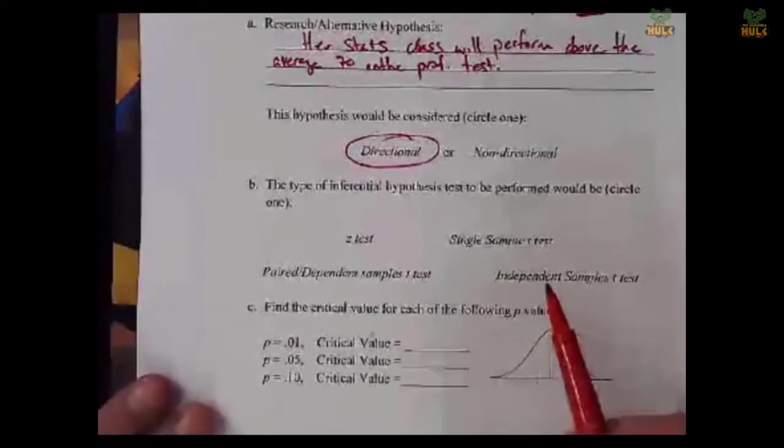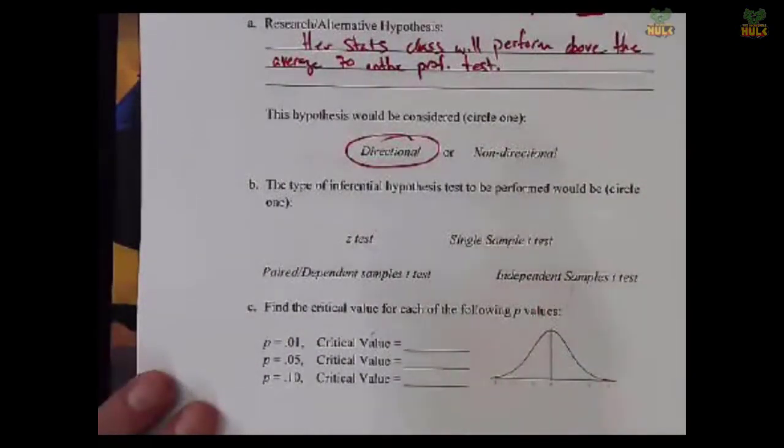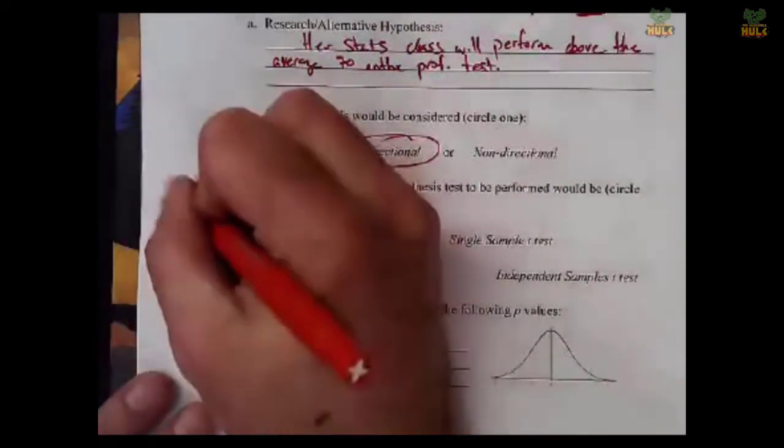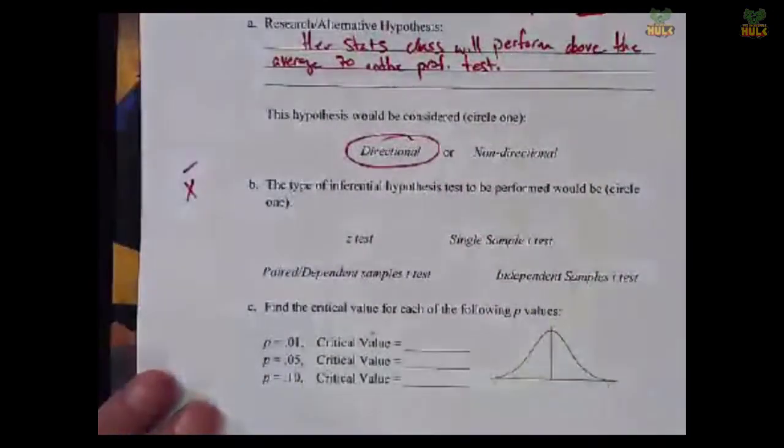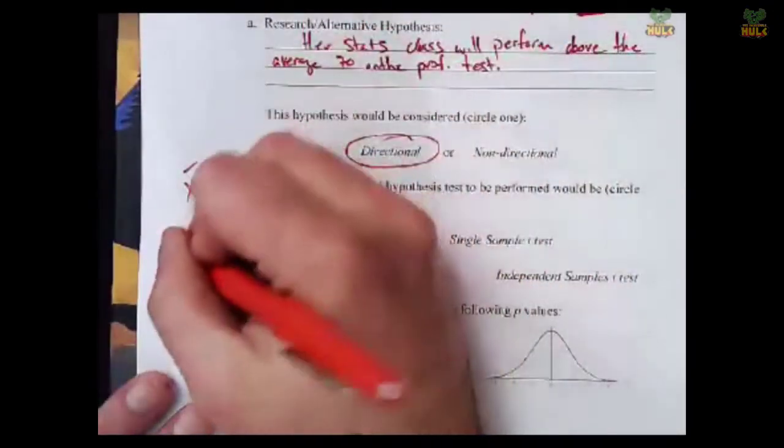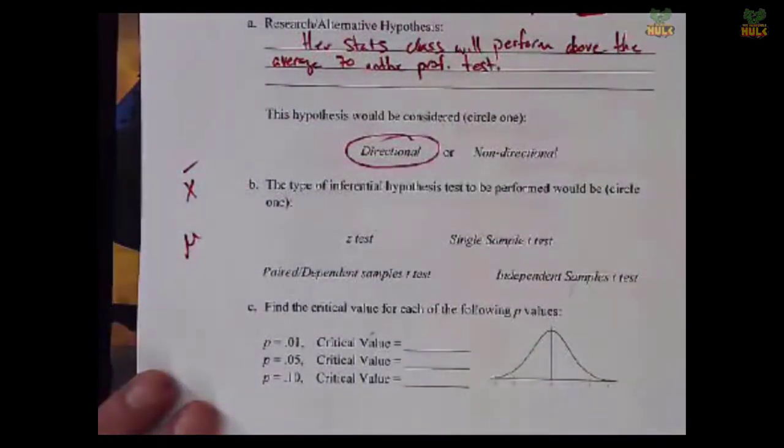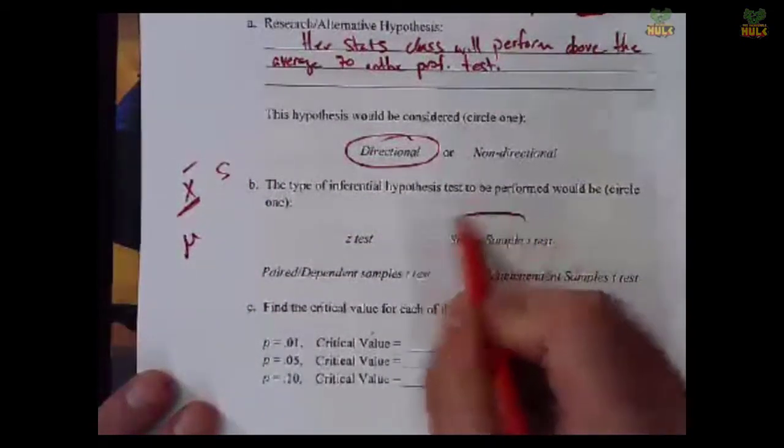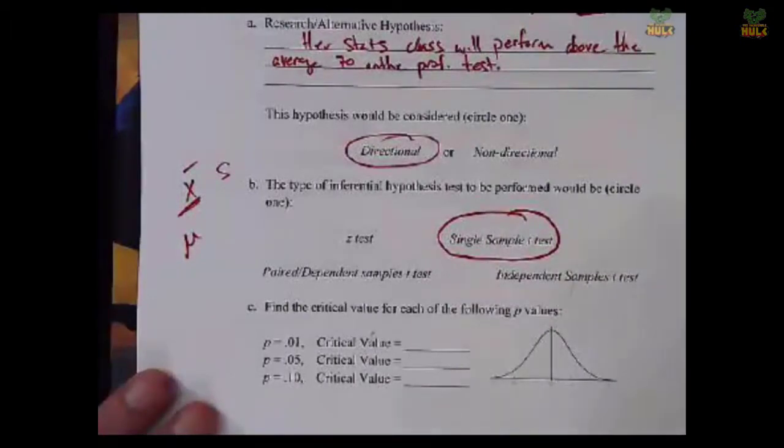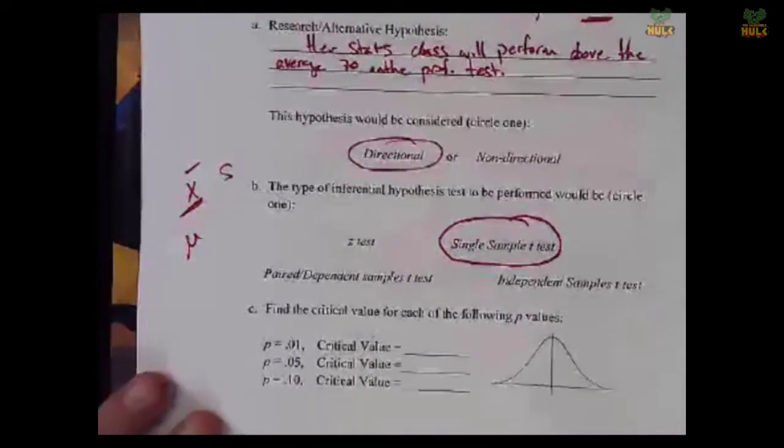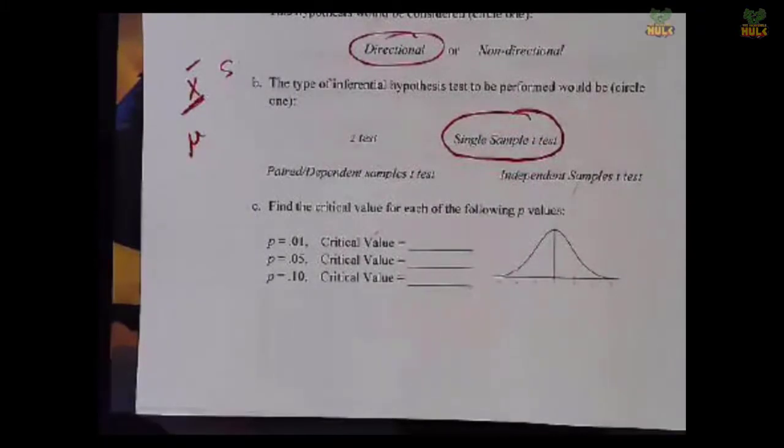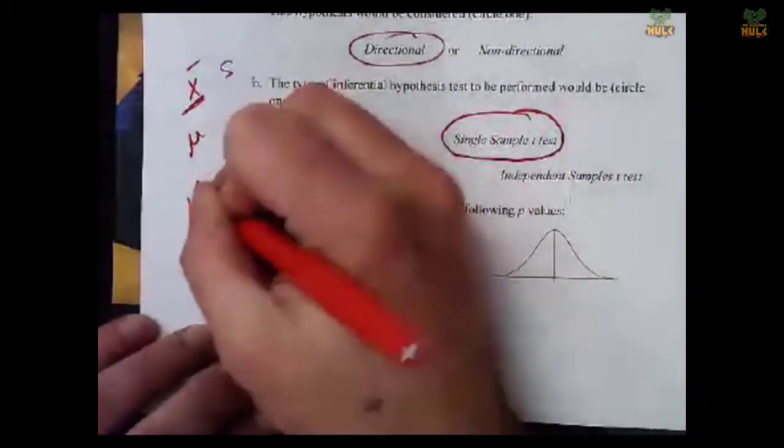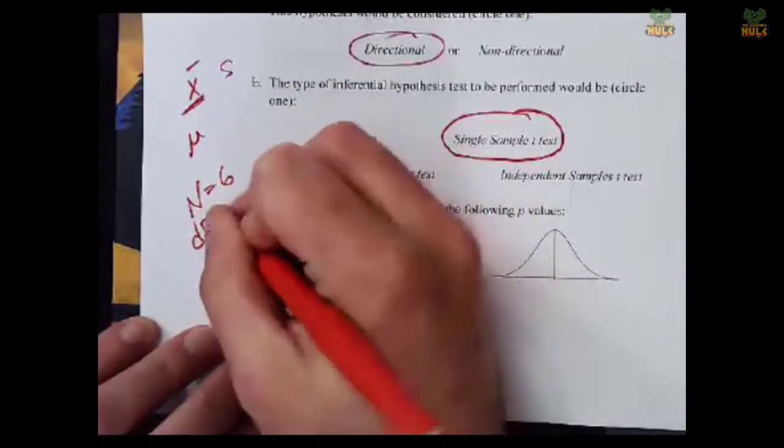We know then that because the direction is predicting in a positive direction, when we get down to calculating our p-values, we need to do positive p-values. So what type of test are we performing? Well, we know that there are six students that are drawn from the class. We can get their average based on their data, so we would know a sample mean. We would know a population mean, or at least a target goal.